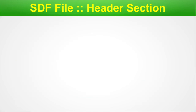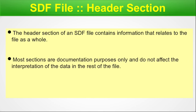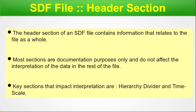The SDF file has a header section but does not have a footer section. The header section contains information that relates to the file as a whole — it is a kind of identity card for the entire file. Most sections are for documentation purposes only and do not affect interpretation of data in the rest of the file. The key sections that do impact interpretation are the hierarchy divider and the time scale.